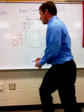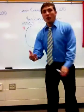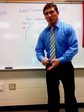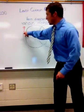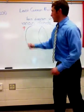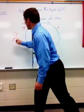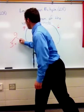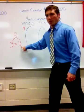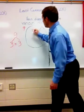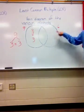I'm going to use prime factorization and the Venn diagram to find the least common multiple. First, I need to find the prime factorization of 9. Using a factor tree: 9 is the same as 3 times 3. They're both prime numbers, so I can write them in my Venn diagram — 3 times 3.